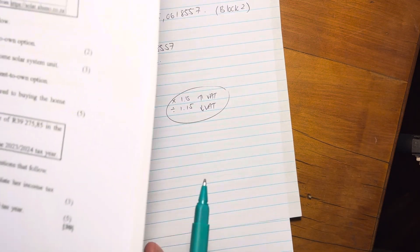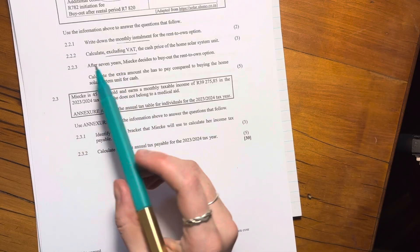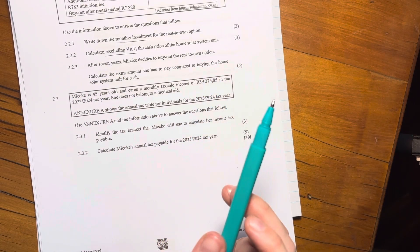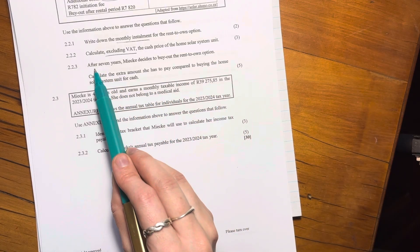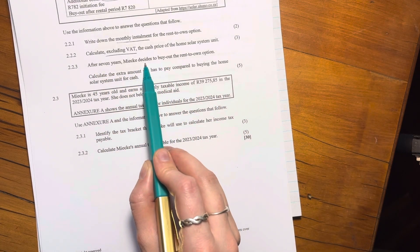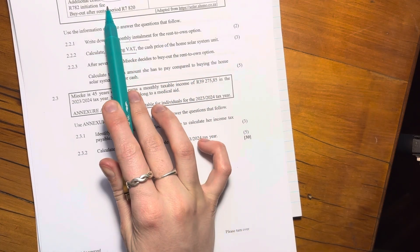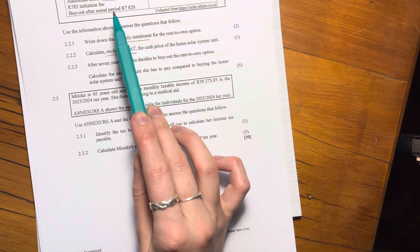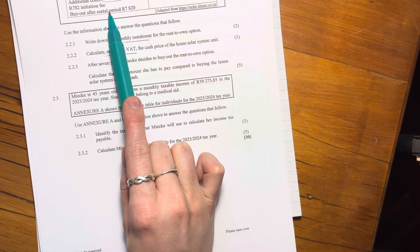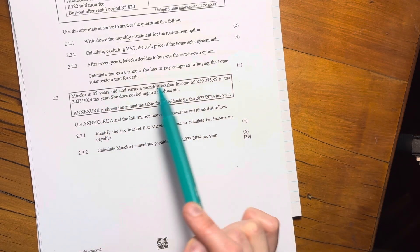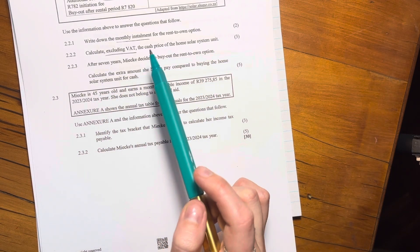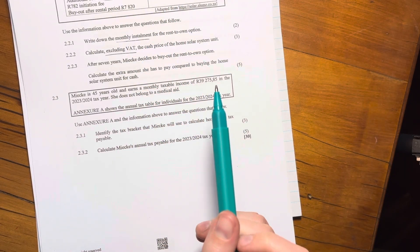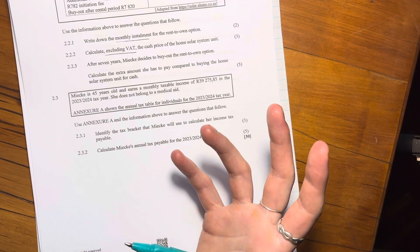So let's now move on to the last question for this video and for the sub question, 2.2.3. We can see it's a couple more marks. It's probably going to be a little bit more working out. After seven years, Mikia decides to buy out the rent-to-own option. So basically, she chose this option and says calculate the extra amount she has to pay. So basically say how much more she has to pay here compared to buying the home solar system unit for cash. So we're comparing the price of this with the price of this, ignoring interest.